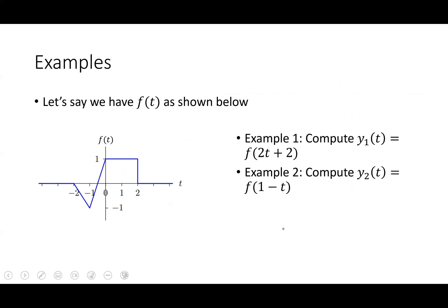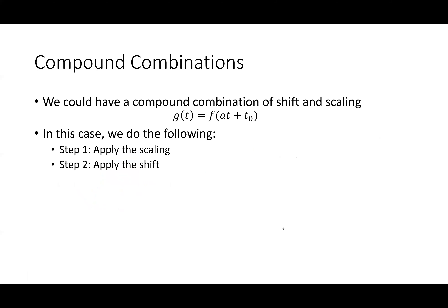What I really want to get to is: what happens if I have a combination? When I have a combination, there are two steps. First, I apply the scaling; second, I apply the shift. Ultimately, F of AT plus T naught can be rewritten as F of A times T plus T naught over A — a scaling by A and a shifting by T naught over A.